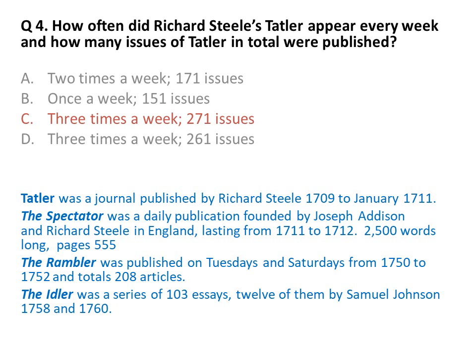Similarly, he with Addison started another journal called The Spectator, founded by Joseph Addison and Richard Steele in England, lasting from 1711 to 1712. Every single issue was around 2,500 words, and total issues run into 555. We also have The Rambler by Samuel Johnson, published on Tuesdays and Saturdays from 1750 to 1752, with a total of 208 articles.